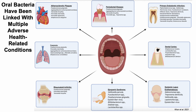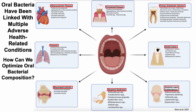Oral bacteria have been linked with multiple adverse health-related conditions. Inside the mouth, they've been linked with dental caries or cavities, primary endodontic infection, periodontal disease, dry mouth, and dry eyes — Sjogren's syndrome. Outside the mouth, oral bacteria have been linked with atherosclerotic plaque, pneumonia, rheumatoid arthritis, and lupus.